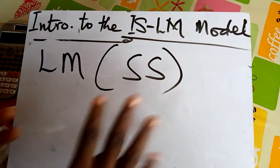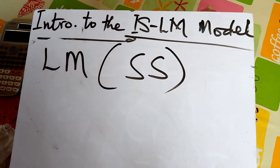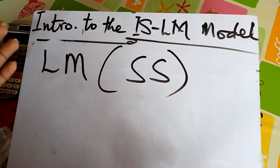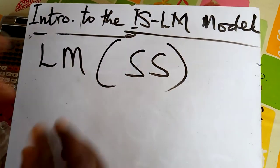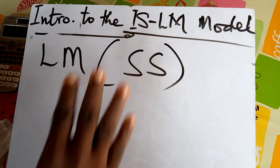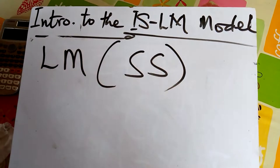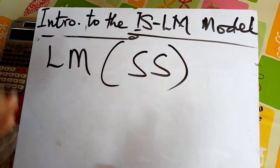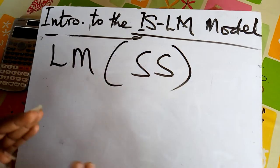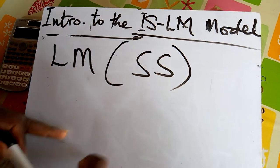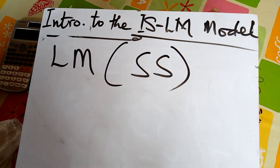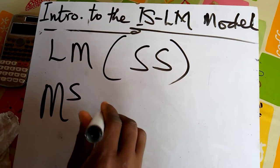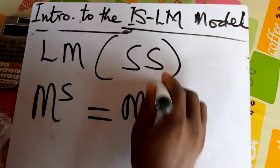With the LM, we deal with money supply controlled by the central bank, or whatever happens in the money market. The central bank tries to regulate money in the economy. We have nominal money supply and nominal money demand. When computing, they will usually give you real money demand, which is M over P — nominal money demand divided by the price level.